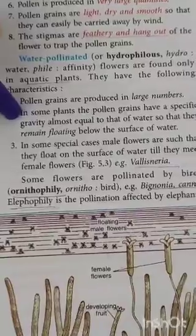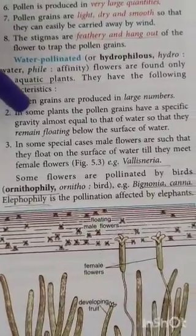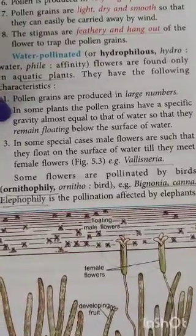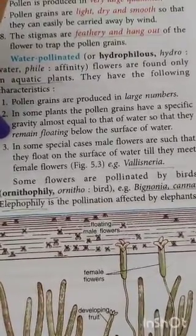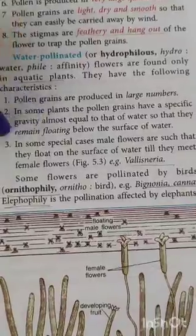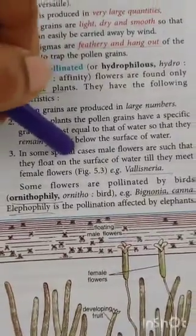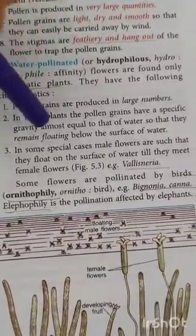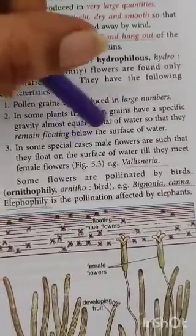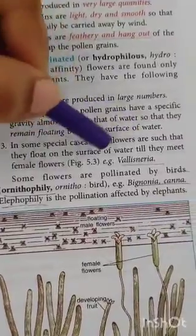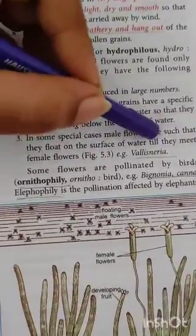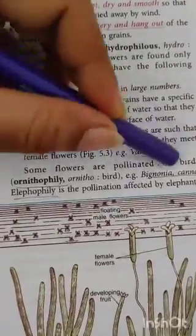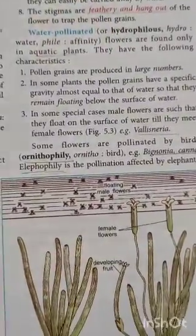In some plants, the pollen grains have a specific gravity equal to that of water, so that they can remain floating below the surface of water and not settle down. In special cases, such as in Vallisneria, male flowers float on the surface of water until the pollens reach the female flower.